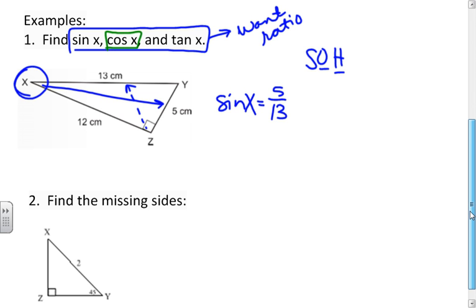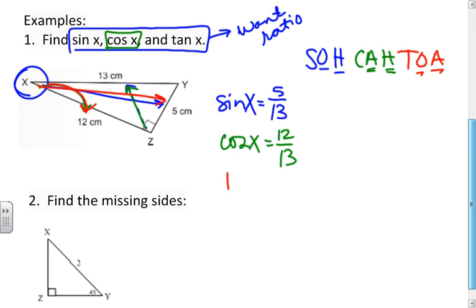If I want the cosine of X, I need the adjacent and the hypotenuse. So the cosine of X is 12 over 13. And if I want the tangent, it's the opposite over the adjacent. So the tangent of X is 5 over 12. That's all there is to finding the trig ratios.